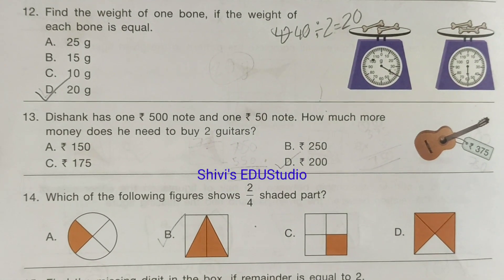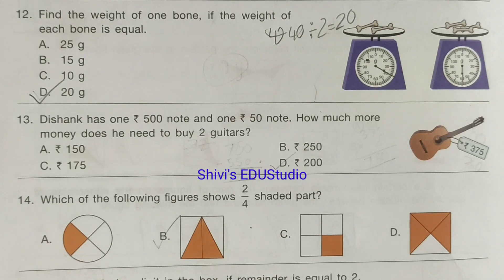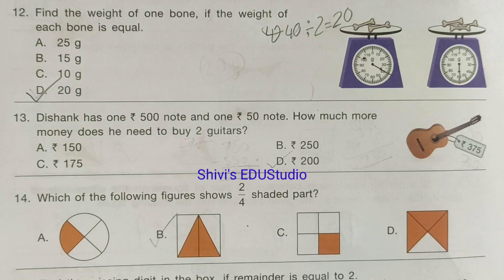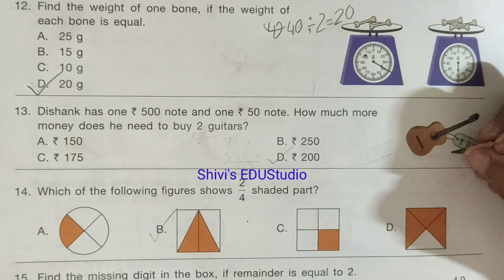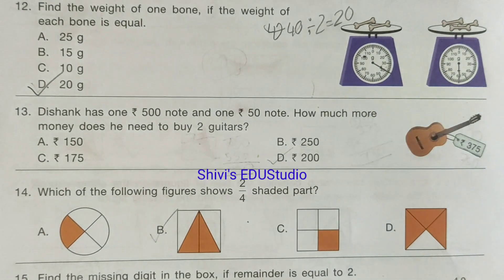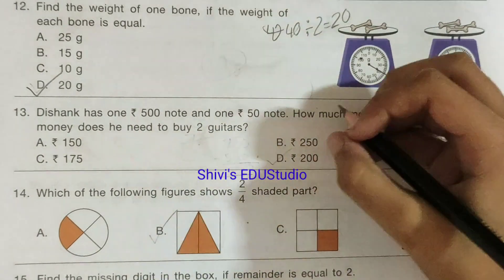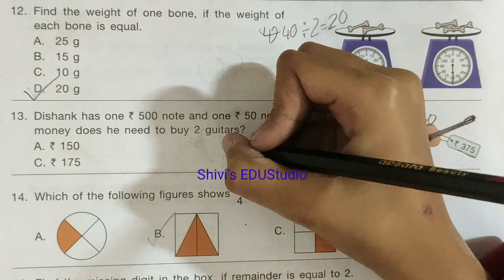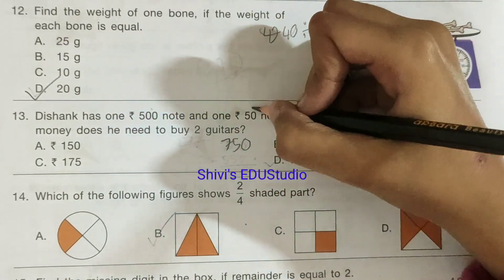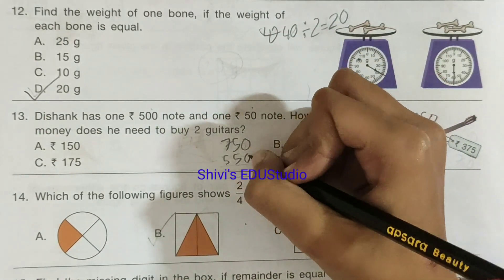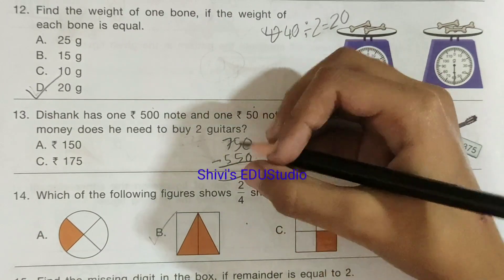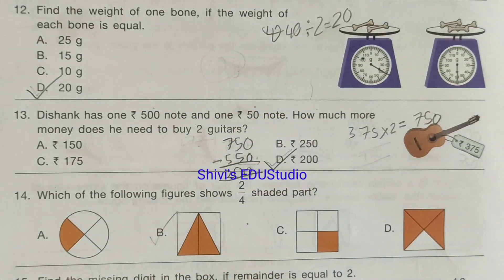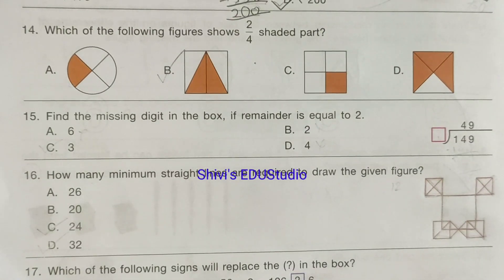Question number 13: Shang has one 500 rupee note and one 50 rupee note. How much more money does he need to buy two guitars? One guitar costs 375 rupees, so two guitars cost 375 multiplied by 2 equals 750. He has 550 rupees total, so 750 minus 550 equals 200. Option D, rupees 200, is the correct answer.